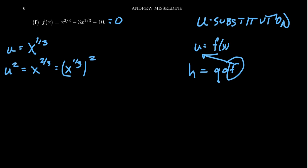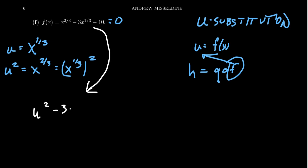With this u-substitution, our equation becomes u² - 3u - 10 = 0. This is a quadratic equation — I often refer to this as a quadratic-like equation. It's like a quadratic if we do the appropriate u-substitution. We've recognized that f(x) = g(h(x)), where h(x) = x^(1/3) is placed inside a quadratic function g(u) = u² - 3u - 10.